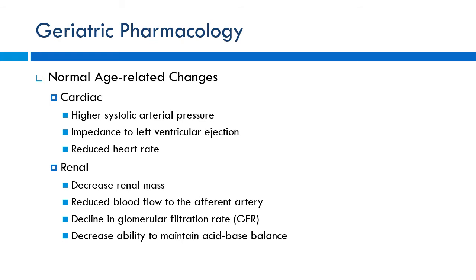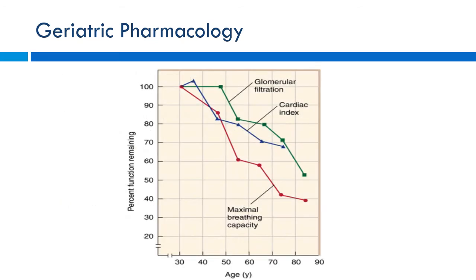From a renal standpoint, elderly patients have decreased renal mass and reduced flow to the afferent arteriole. The glomerular circulation becomes less compliant, leading to a decline in GFR. This means we can't process drugs as effectively or maintain acid-base balance. Looking at a chart of organ function over time, breathing capacity, GFR, and cardiac index all decline. A 90-year-old with a creatinine of 0.6 doesn't have great renal function — they just have muscle wasting and aren't producing much creatinine.